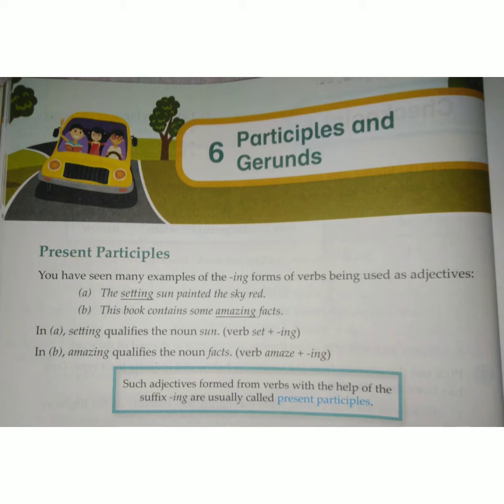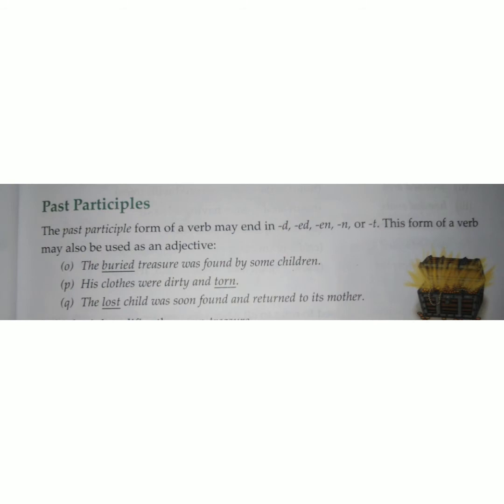Firstly, we will discuss what present participles are and how they are formed. You have seen many examples of the 'ing' form of a verb being used as adjectives. When we use a verb with 'ing' as an adjective, it is known as a present participle. For example, 'the setting sun painted the sky red' — here 'setting' is basically a verb but it adds meaning to the noun, so it is a present participle.